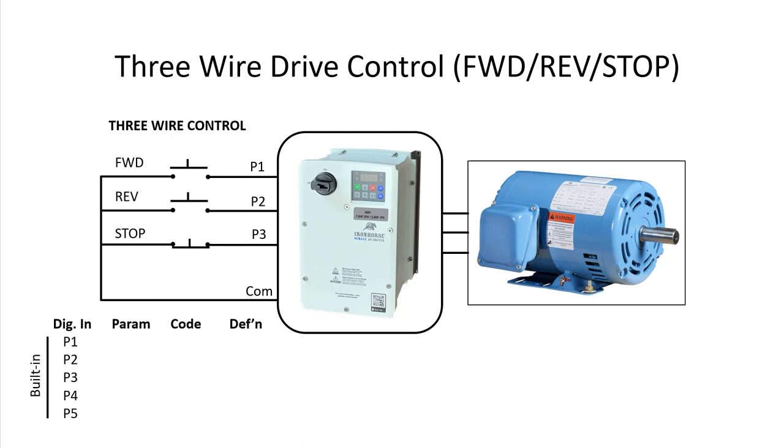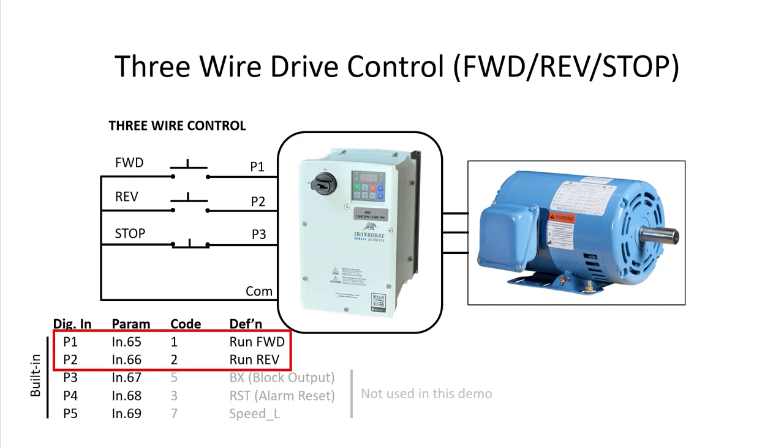These are the built-in digital inputs that come with the drive, the parameters used to configure them, and the default values. Using terminal P1 and P2 to control the direction is exactly what we want, so no change is needed there. And we'll use digital input P3 which defaults to an output inhibit for the stop button which is code 14.